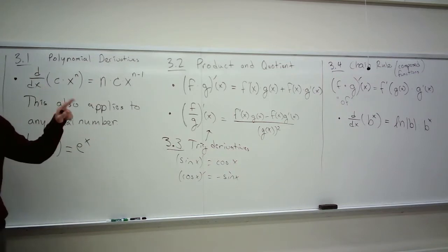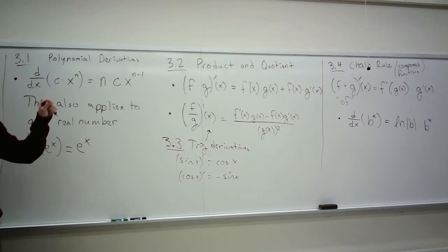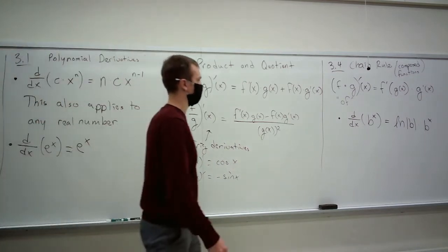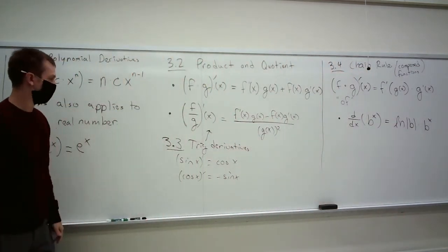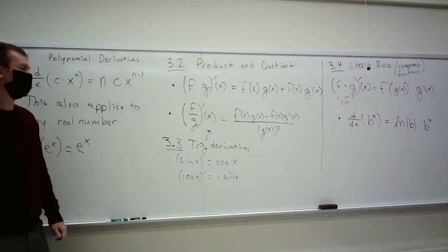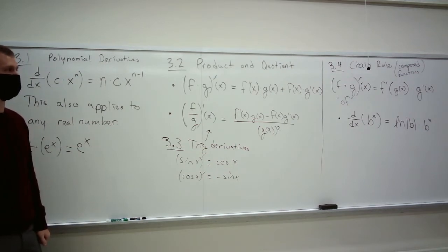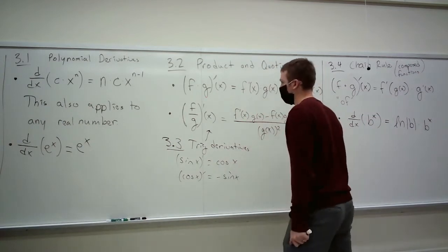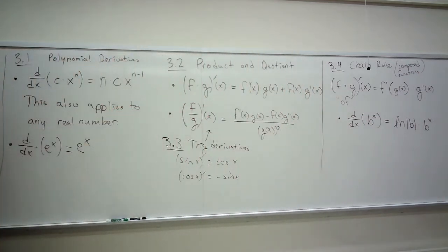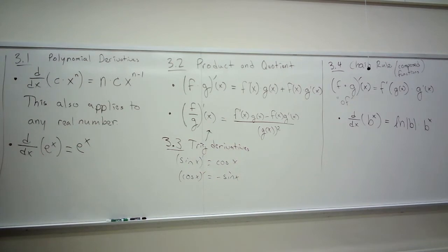I gave three, I think, as an example, but it can be any positive number, except one. One's not really very interesting. And this did not come out to be the most natural thing. If you remember, it was the natural log of b times b to the x. Now, I put absolute values on b, because the natural log can only have positive numbers input to it.